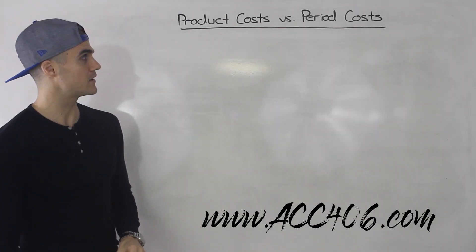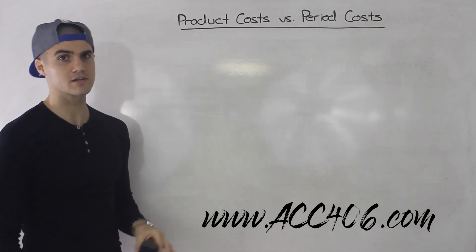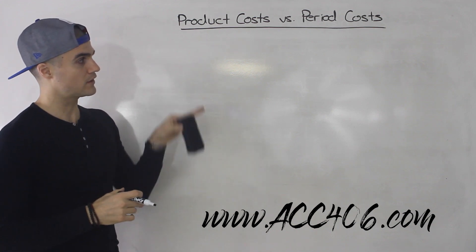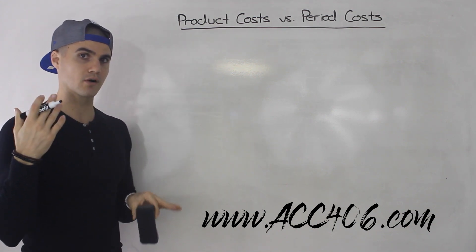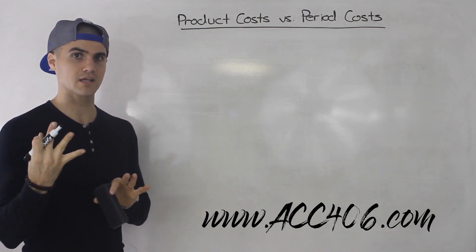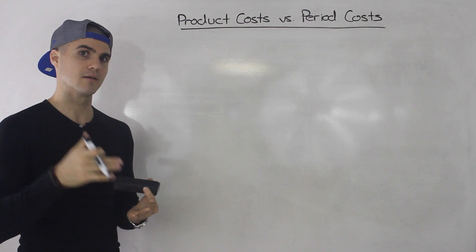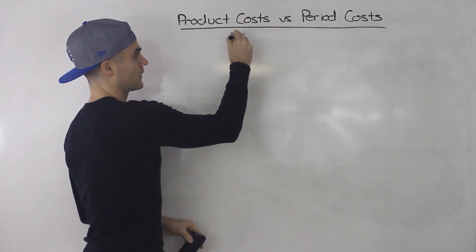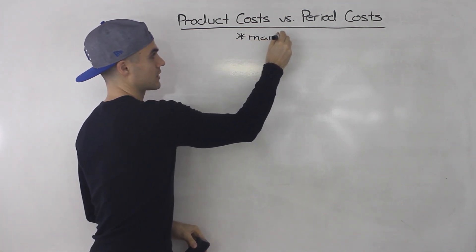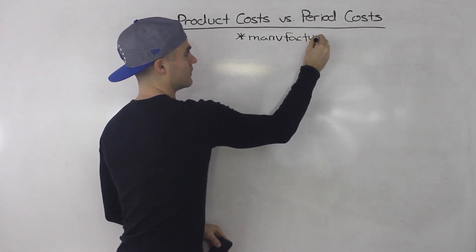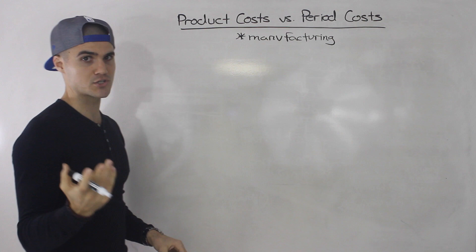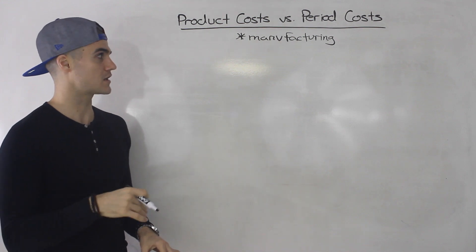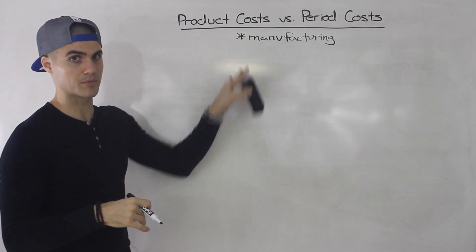Welcome back. Moving on to the next topic. I'm now going to talk about product cost versus period cost, and you're definitely going to see these concepts come up in your course. Your prof is definitely going to talk about them. Before getting into these, I want to make a note — I described in a previous video that there are three general types of companies: manufacturing, merchandising, and service. When talking about product versus period cost, I'm talking about a manufacturing company.